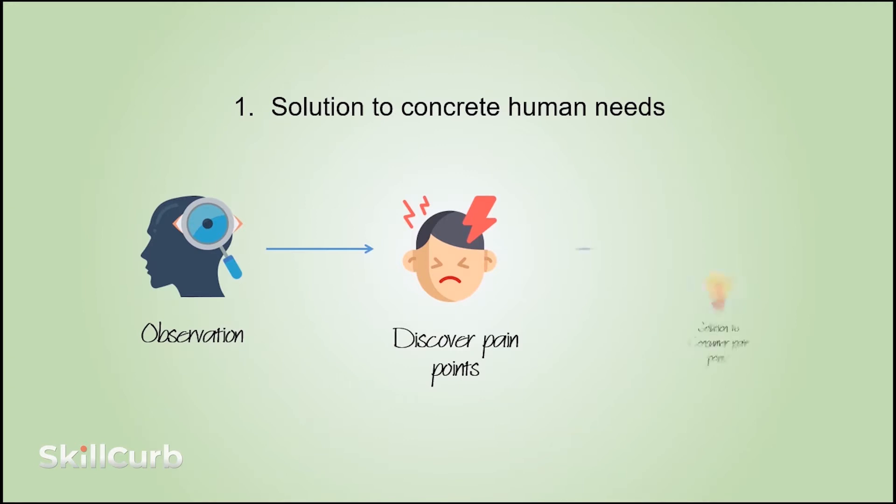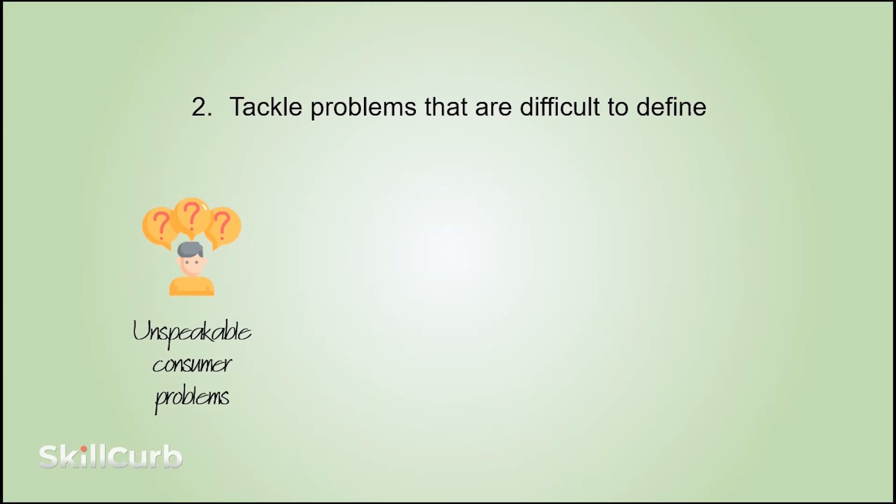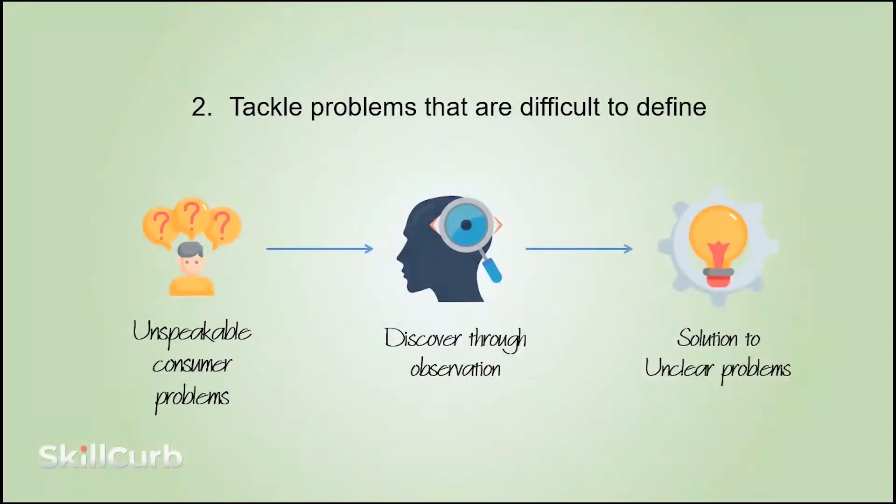Design thinking can provide solutions to those pain points once they are identified. It tackles problems that are ambiguous or difficult to define. Consumers often don't know what problem they have that needs solving, or they can't verbalize it. But upon careful observation, one can identify problems based on what they see from real consumer behavior. This helps define ambiguous problems and makes it easier to surface solutions.